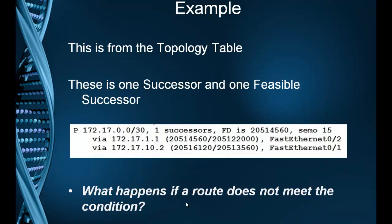Let's look at the topology table again. Here is one entry from the topology table for the network 172.17.0.0/30. It says there's one successor, but there are two entries, so the second entry must be the feasible successor. The topology table lists the feasible distance — say, 4560 — for the primary route. In order to be a feasible successor, his reported distance, the second number in the second entry, must be lower than the feasible distance. In this case it ends in 3560, which is less than 4560, so he does become a feasible successor.